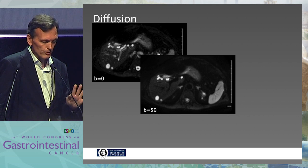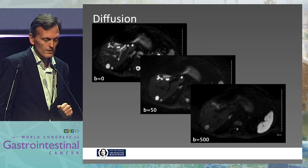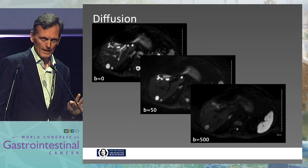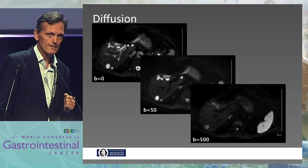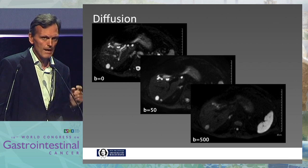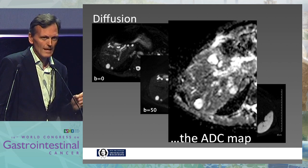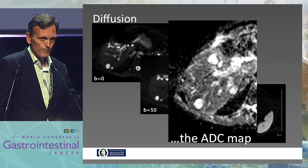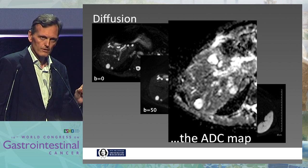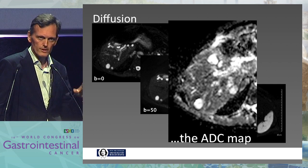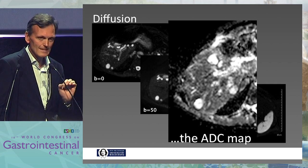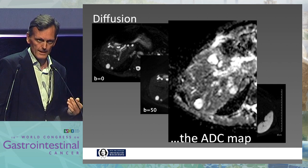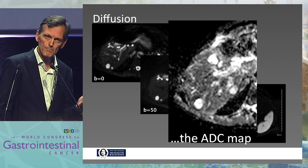At even higher B values, we lose all the protons in those different areas except for the one we still see. But this is still not decisive. What you need is another mathematical trick to get rid of artifacts — that's the strange ADC map, the apparent diffusion coefficient. This is a parametric image where the slope of signal against B value is turned into a gray value in a given voxel. As a rule of thumb: if it is bright, it's a cyst; if it is black, it's a tumor, or even an abscess with a lot of cell density.